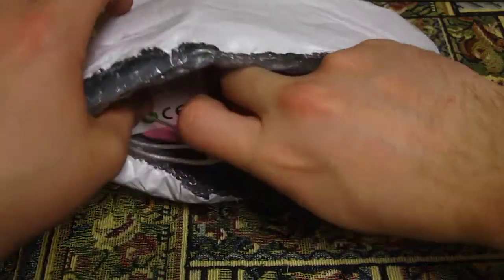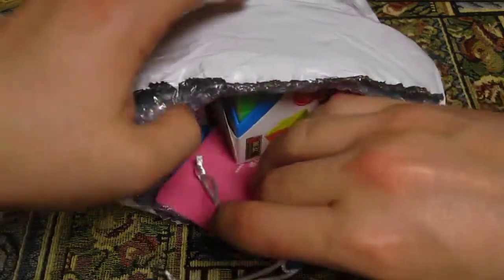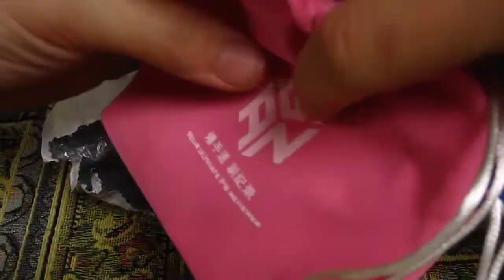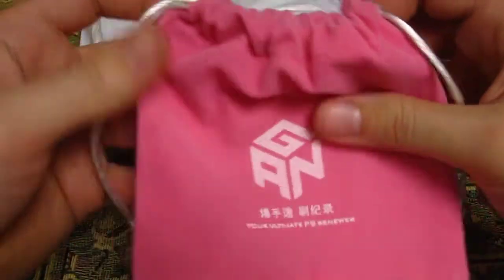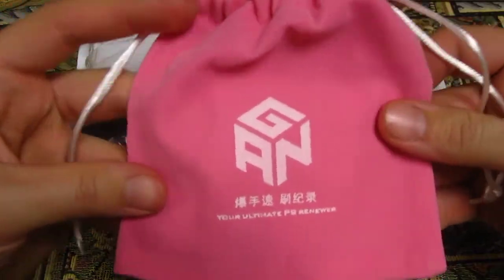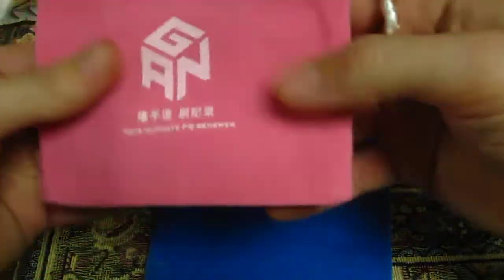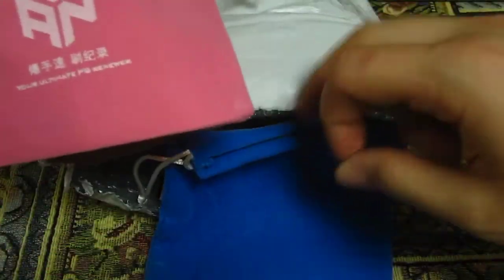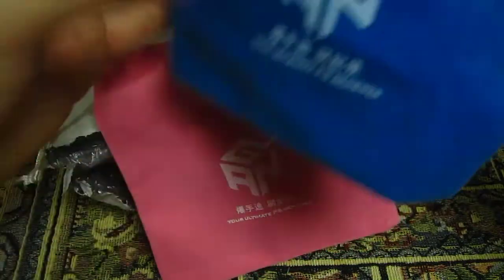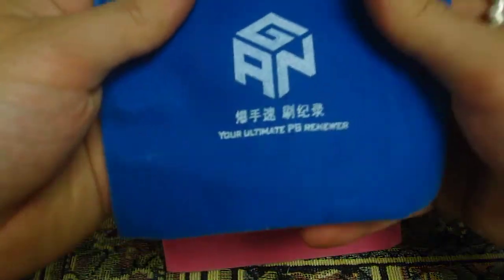The first thing I got here is a couple of cube bags. Again, cube bags. Pretty big, I think you could put a 5x5 in these, no problem. Really nice, velvety. I don't really buy cube bags much, but they were really cheap, so I thought, hey, why not.